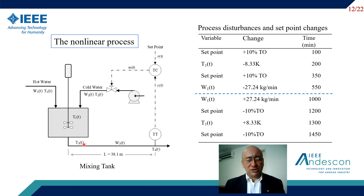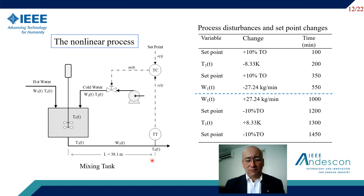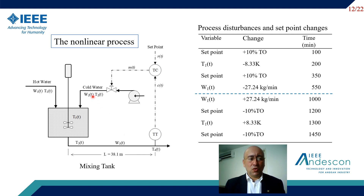The outlet temperature measured at 38.1 meters downstream from the tank is the control variable. This long pipe provides a large and variable process time delay, and the cold water flow is the manipulated variable.